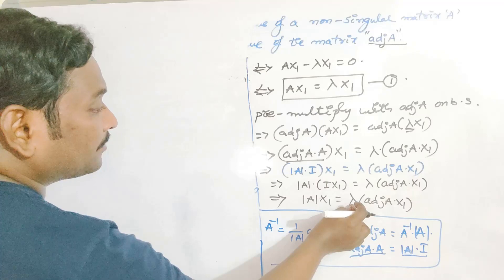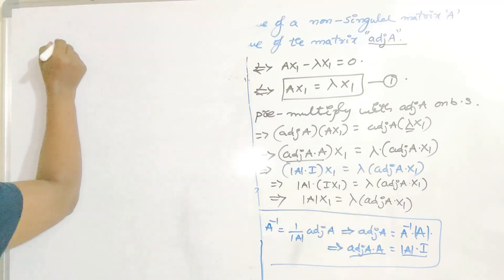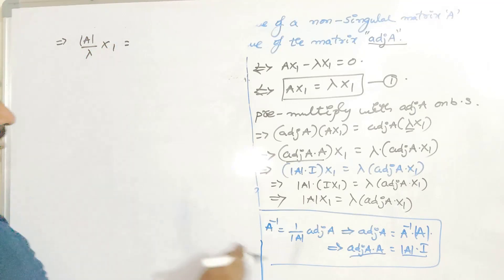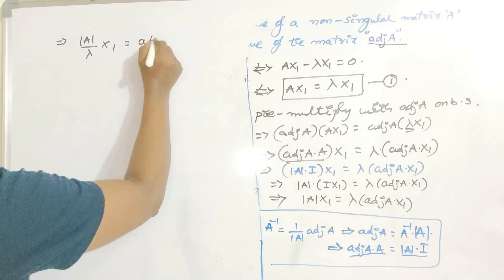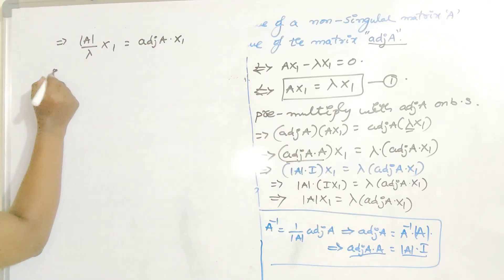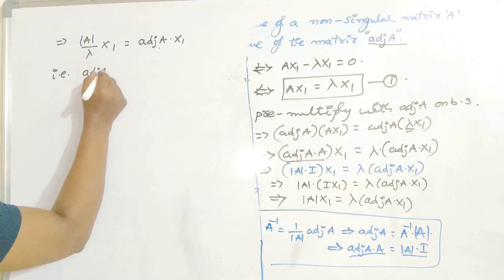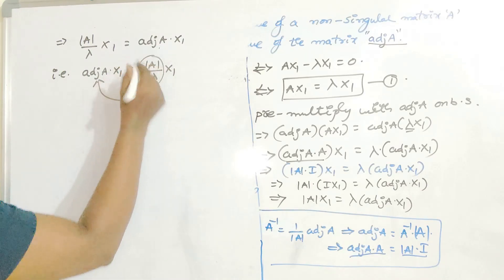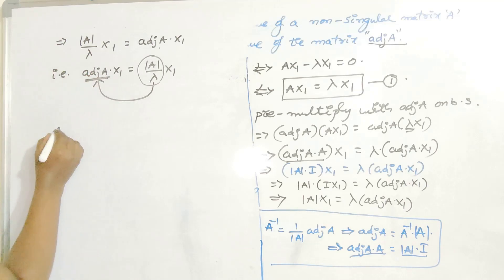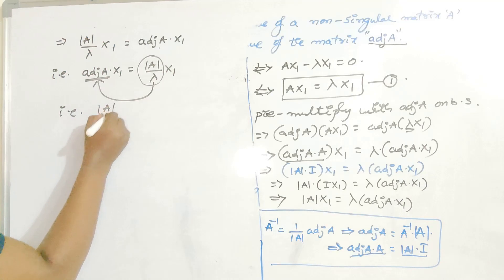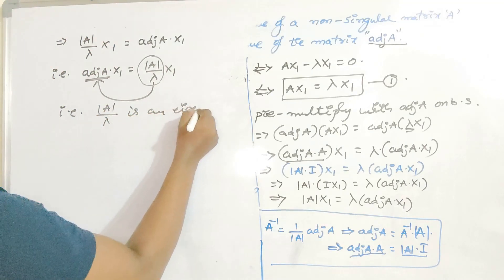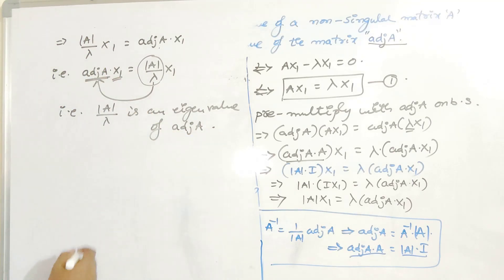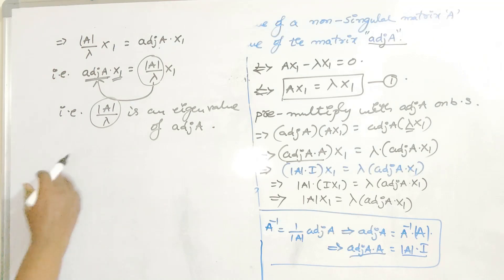Since lambda is a non-zero real number, I divide the entire equation by lambda. You get det(A) by lambda times x1 equals adjoint(A) times x1. So adjoint(A) times x1 equals det(A) by lambda times x1. This shows that det(A) by lambda is an eigenvalue of adjoint(A), and x1 is the same eigenvector corresponding to det(A) by lambda. Only the eigenvalue changes; there is no change in the eigenvector.